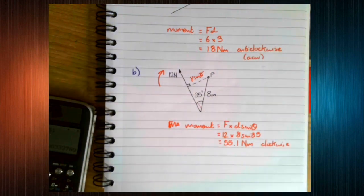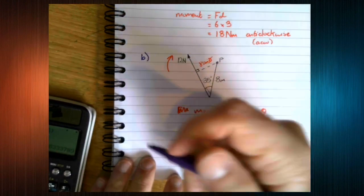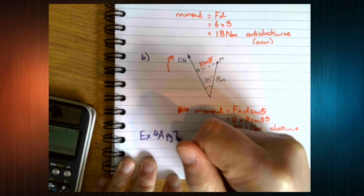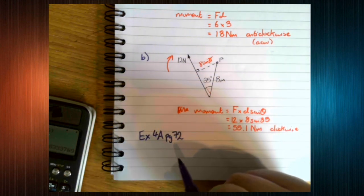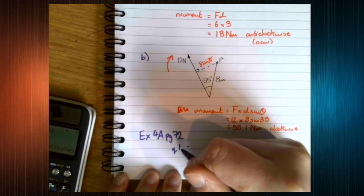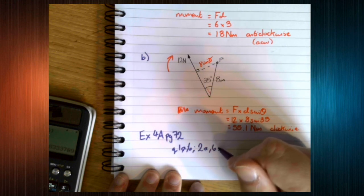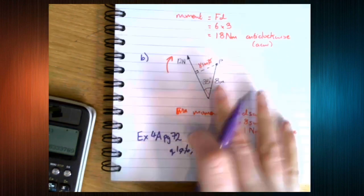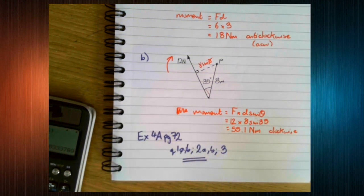But for now, what I'd like you to do, please, is have a practice of this basic moments stuff. So, exercise 4A, page 72 in the Stats and Mechanics Year 2 textbook. Not the pure anymore. The Stats and Mechanics. And I'd like you just to do questions 1 A and B, 2 A and B, and question 3. It's not a long exercise. So if you feel like you need more practice in this, do more of it. But this is the limited amount that I would like you to do.